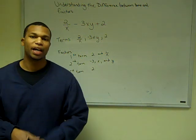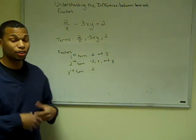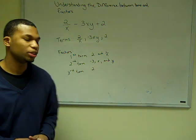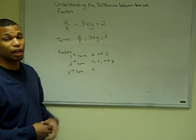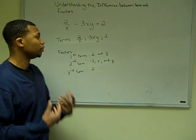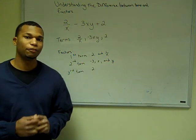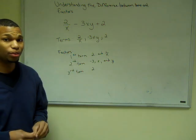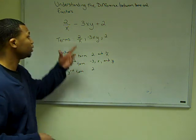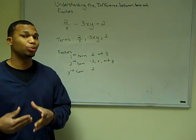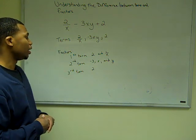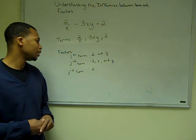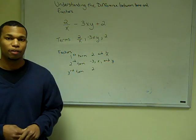In this example, we have 2/x minus 3xy plus 2. Identifying the terms: our terms are 2/x, negative 3xy, and 2. For factors: in the first term it's 2 and 1/x, because 2/x is the same as 2 times 1/x. In the second term, the factors are negative 3x and y. And in the third term, the factor is just 2.